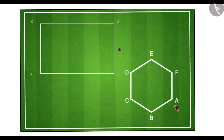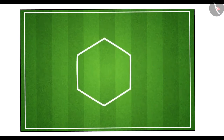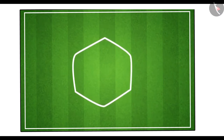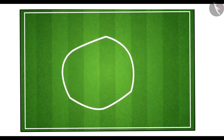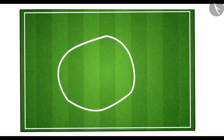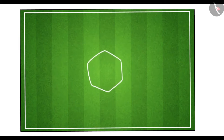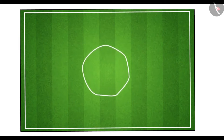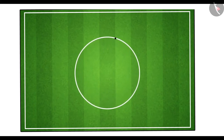If we increase the number of sides of the track indefinitely, then the shape of the track will become a circle and the length of each side will decrease to a point.